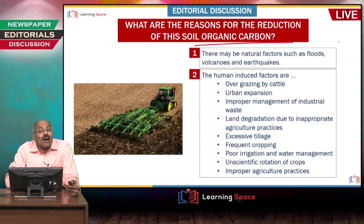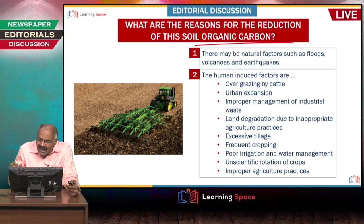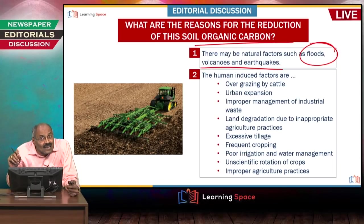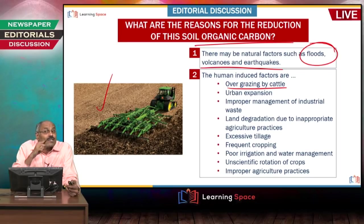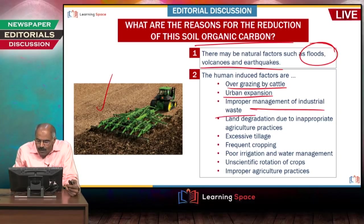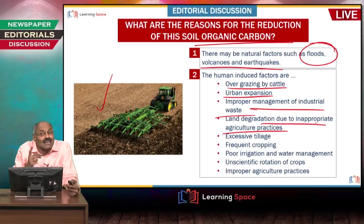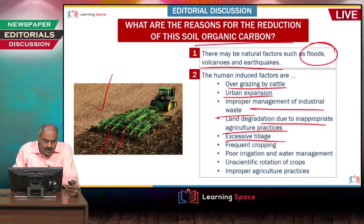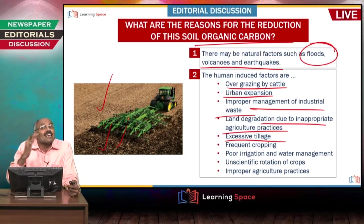What are the reasons for the reduction of soil organic carbon? It can be reduced by natural factors like floods, volcanoes, and earthquakes. Human-induced factors include overgrazing by cattle — if cattle graze more, soil organic carbon is lost through runoff. Other causes include urban expansion, improper management of industrial waste, land degradation due to inappropriate agriculture practices, and excessive tillage. If excessive tillage is undertaken with a tractor, there is a possibility that organic carbon may be lost.